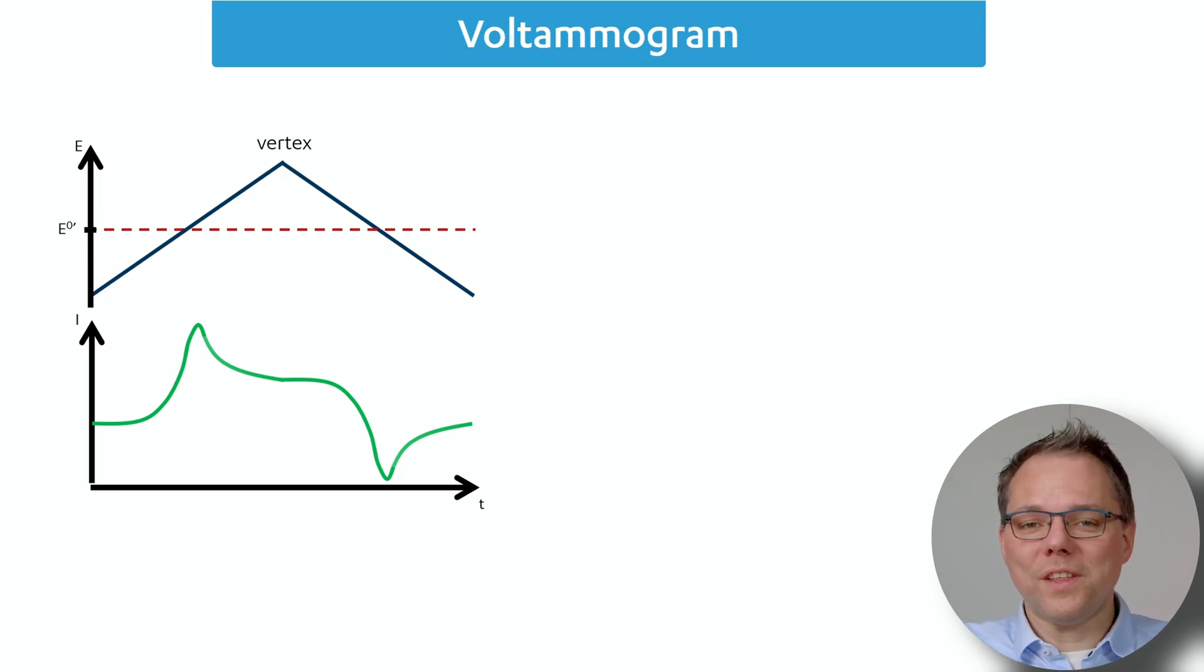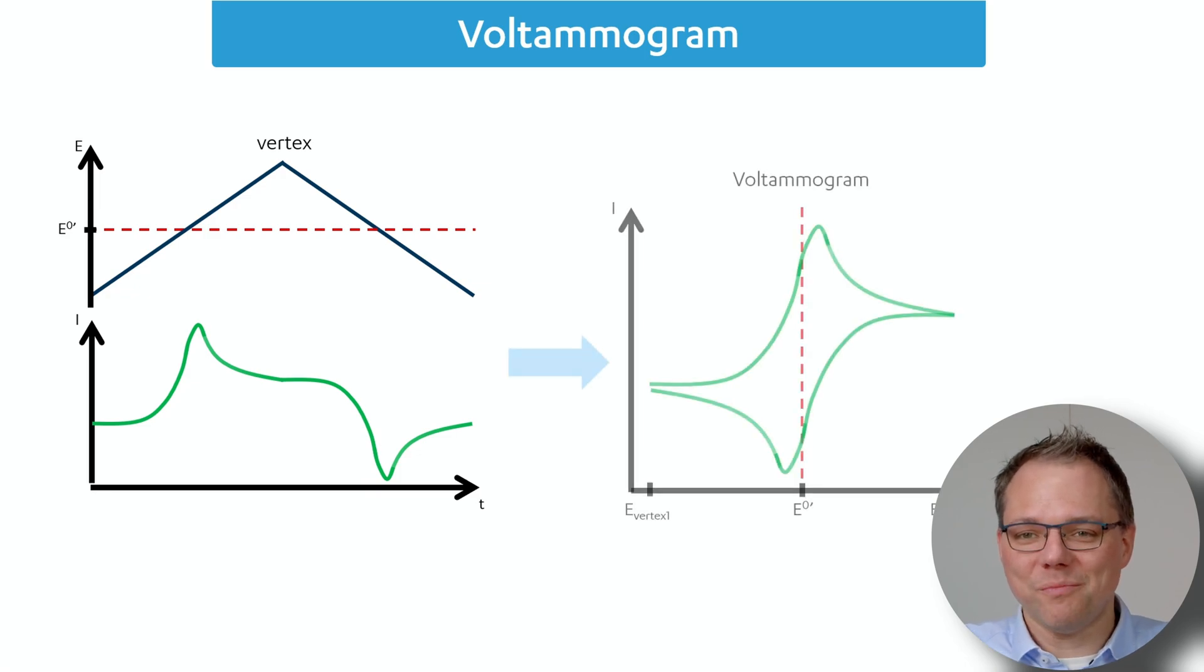which is a plot of the current versus the potential. Then it looks like this. So you've kind of folded the current around and now it looks like this typical duck shape that you most likely have seen somewhere.